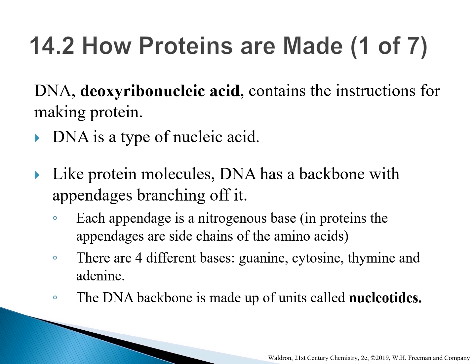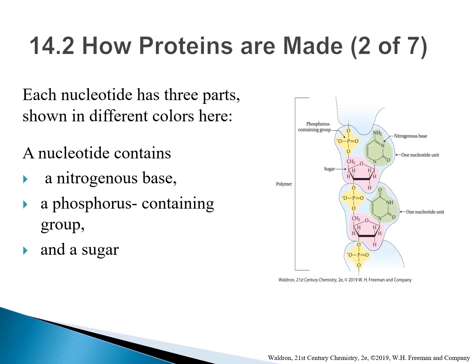The backbone of DNA is made up of only four different nucleotide building blocks. Nucleotides are monomers that bond to form DNA polymer chains. Each nucleotide has three parts: a phosphorous-containing group and a sugar part make up the backbone, while nitrogenous bases dangle from the backbone.